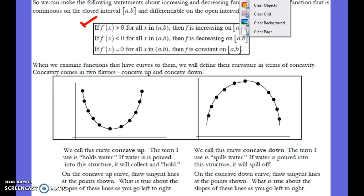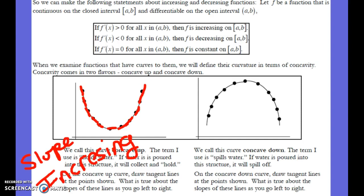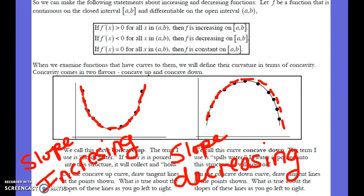Now let's look at concavity. On the left we have concave up and on the right concave down. Concave up holds water; concave down, water spills off. If we draw tangent lines on a concave-up curve, they get flatter toward zero then steeper going right — so the slope is increasing. Concave down is the opposite: slope starts very positive, decreases through zero, and becomes very negative.